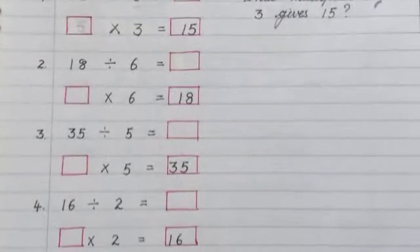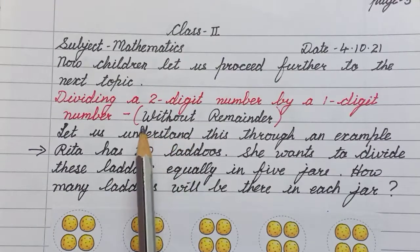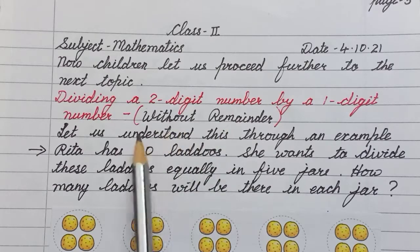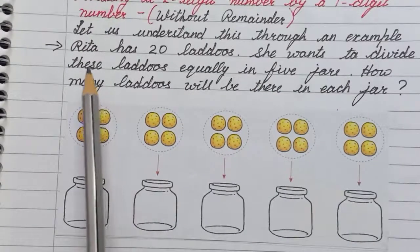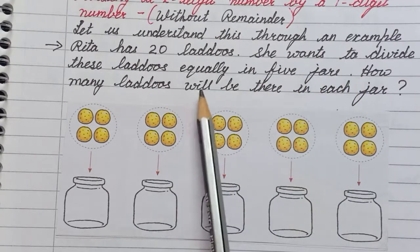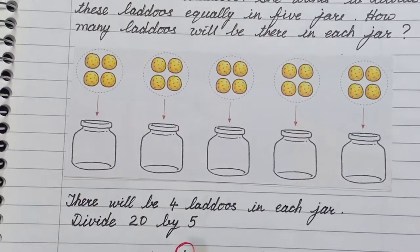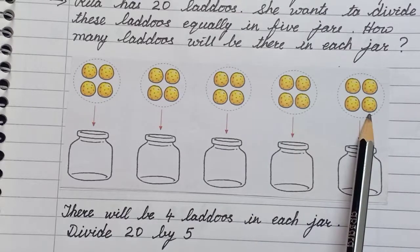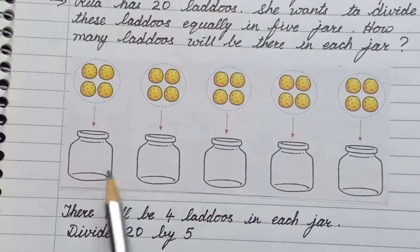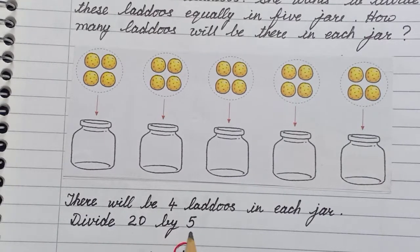In the same way you are going to do the rest of the sums. Now let us learn dividing a two-digit number by a one-digit number without remainder. We also learn what a remainder is. Suppose Rita has 20 laddos and she wants to divide these laddos equally into 5 jars. So these are the 5 jars — how many laddos will there be in each jar? You can see there are 4 in each jar, divided equally. Division means dividing equally.